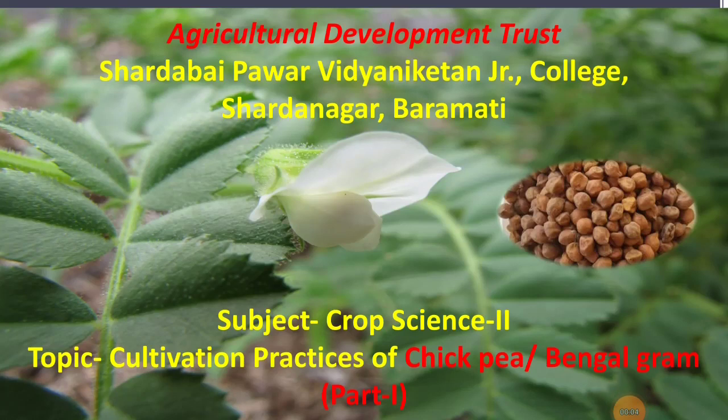Today we are going to discuss about the cultivation practices of gram. It is also called as chickpea, and it is also called as Bengal gram. Gram is a most important pulse crop. It fixes atmospheric nitrogen into the soil and it improves the soil fertility.